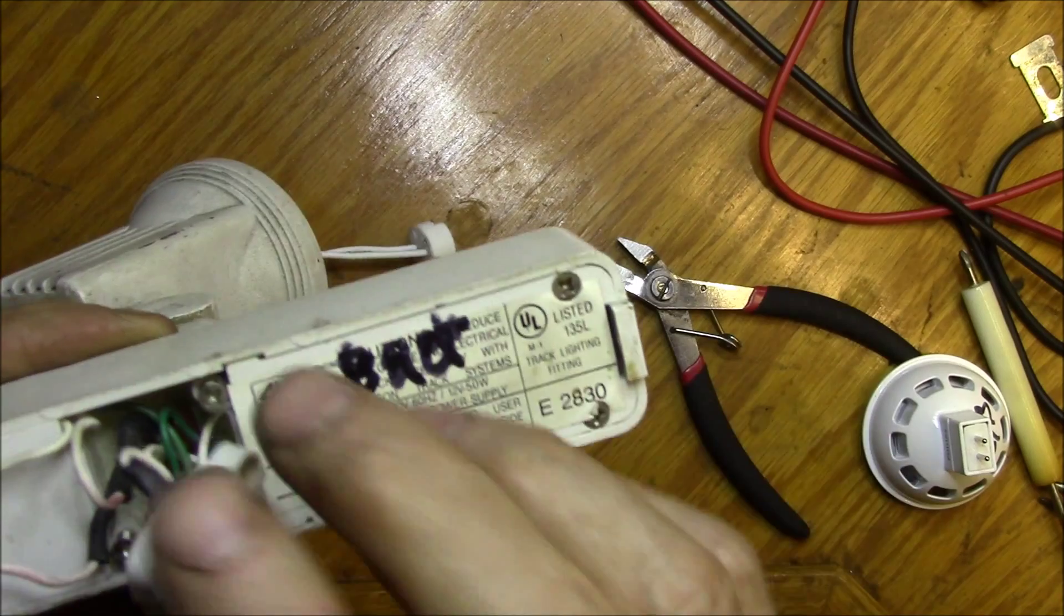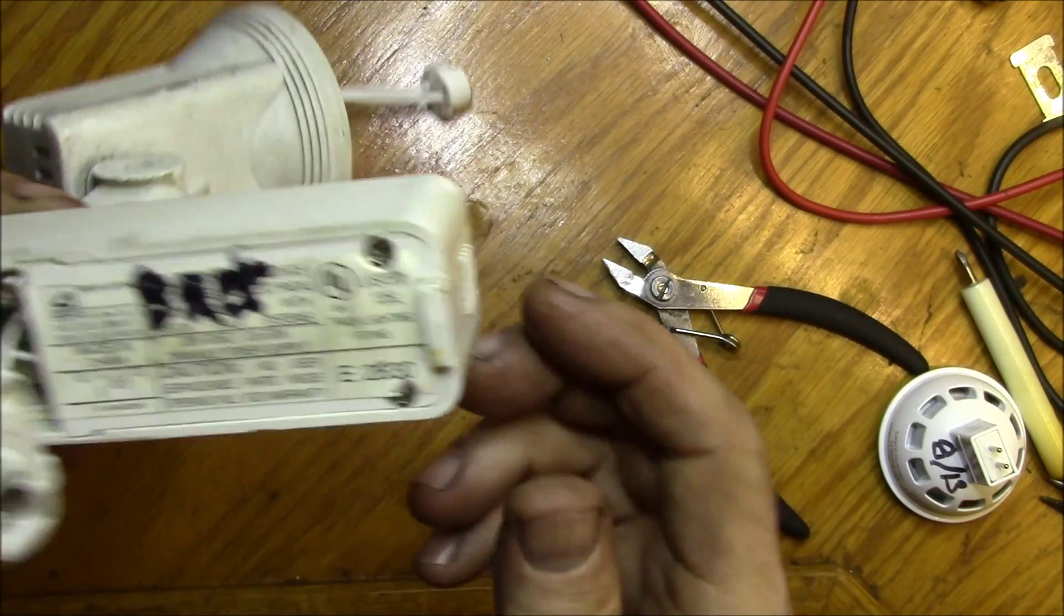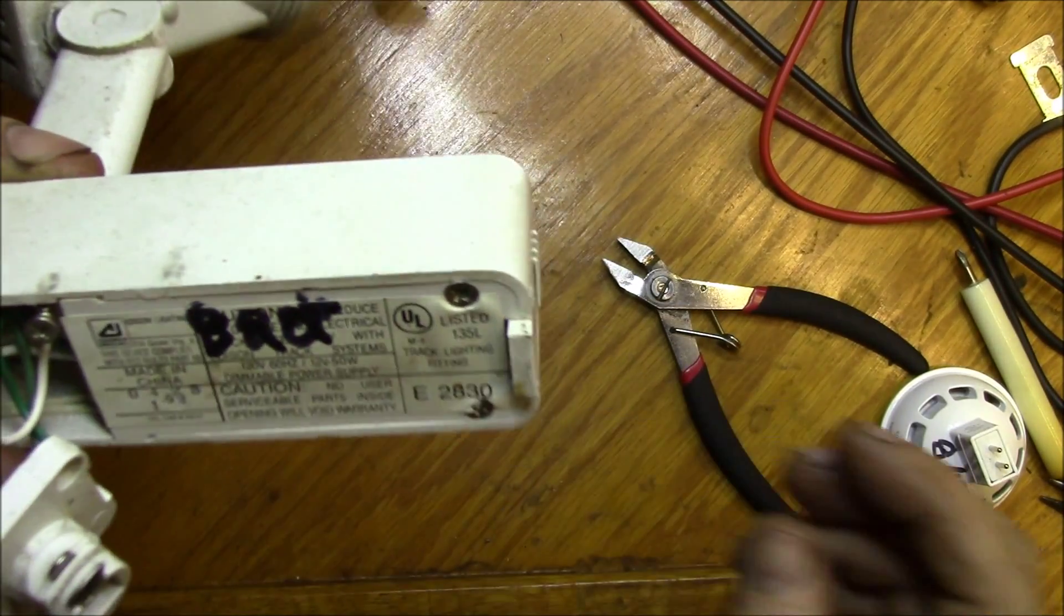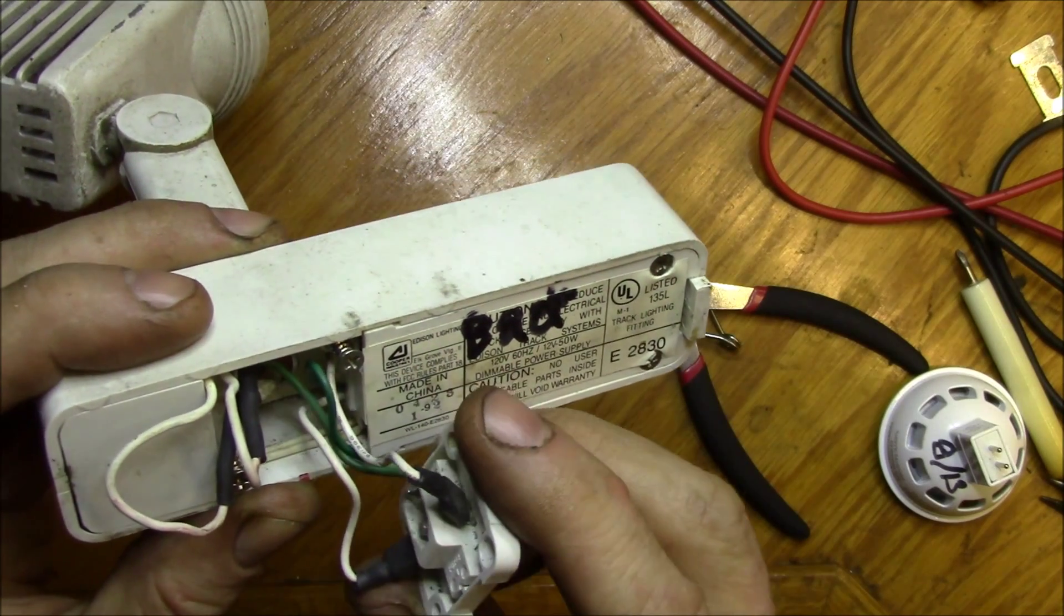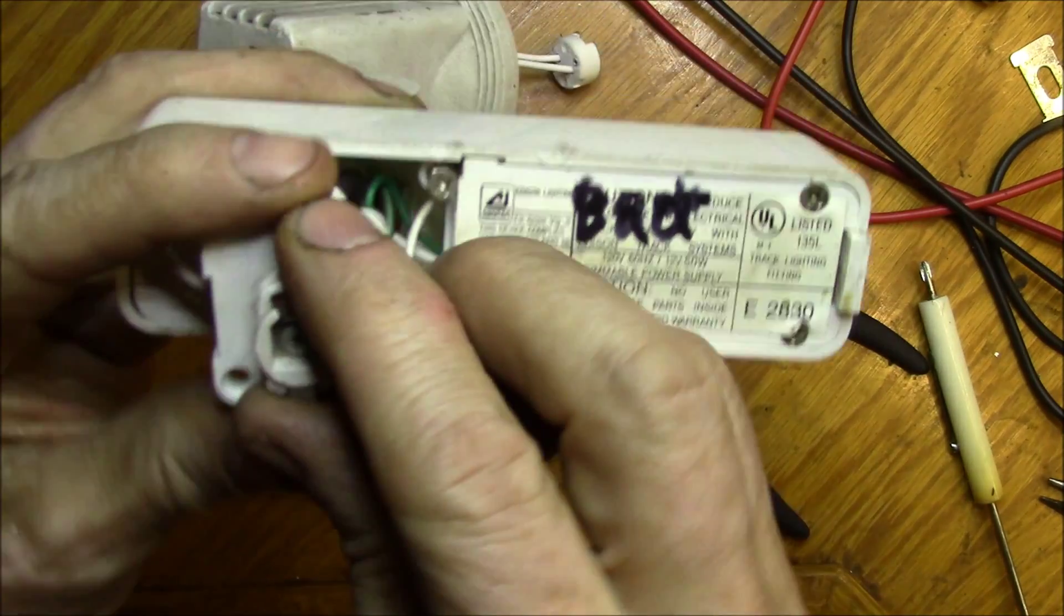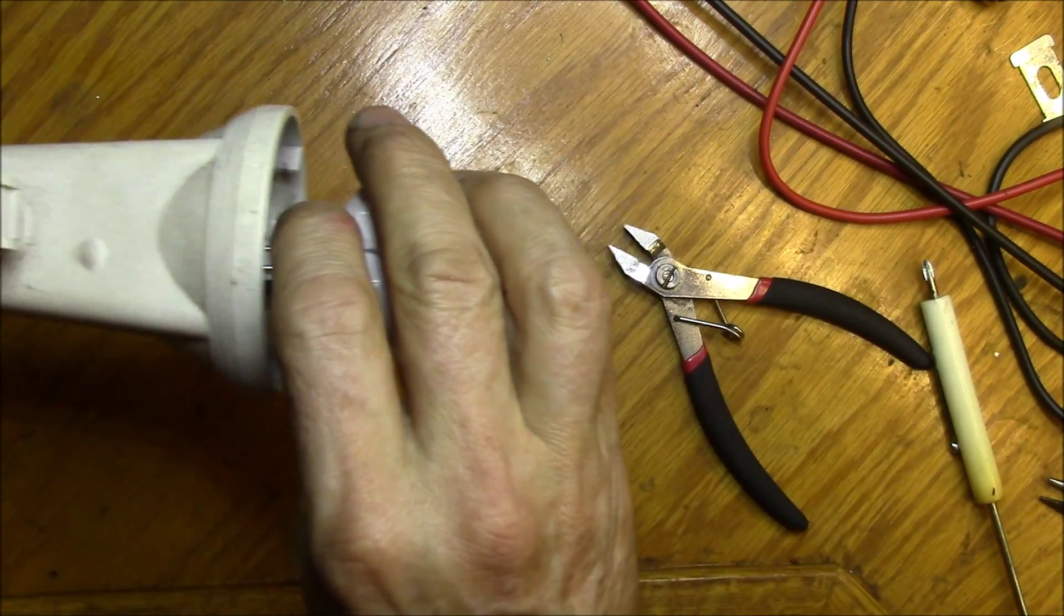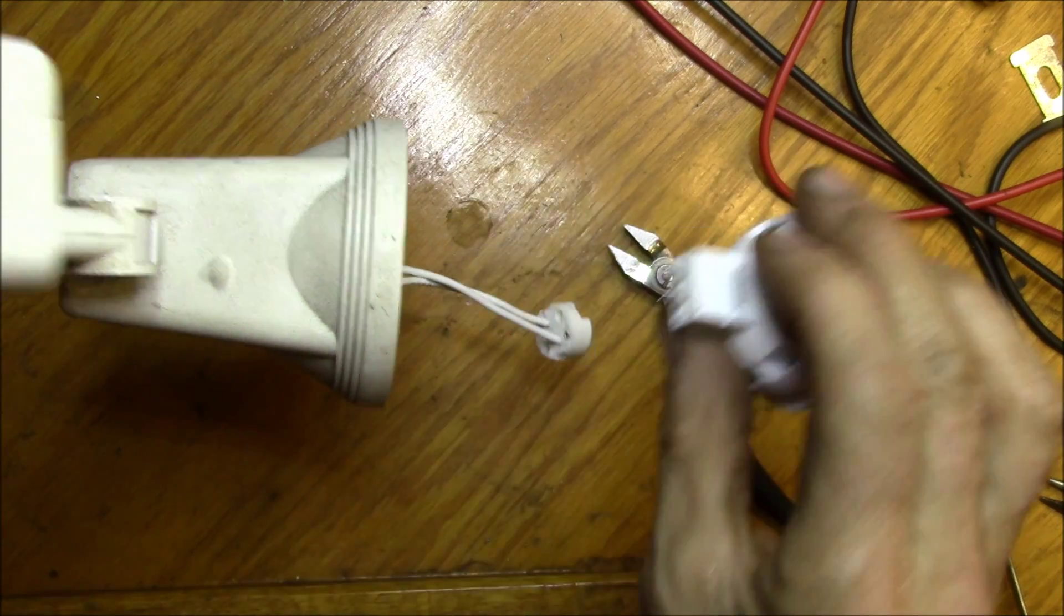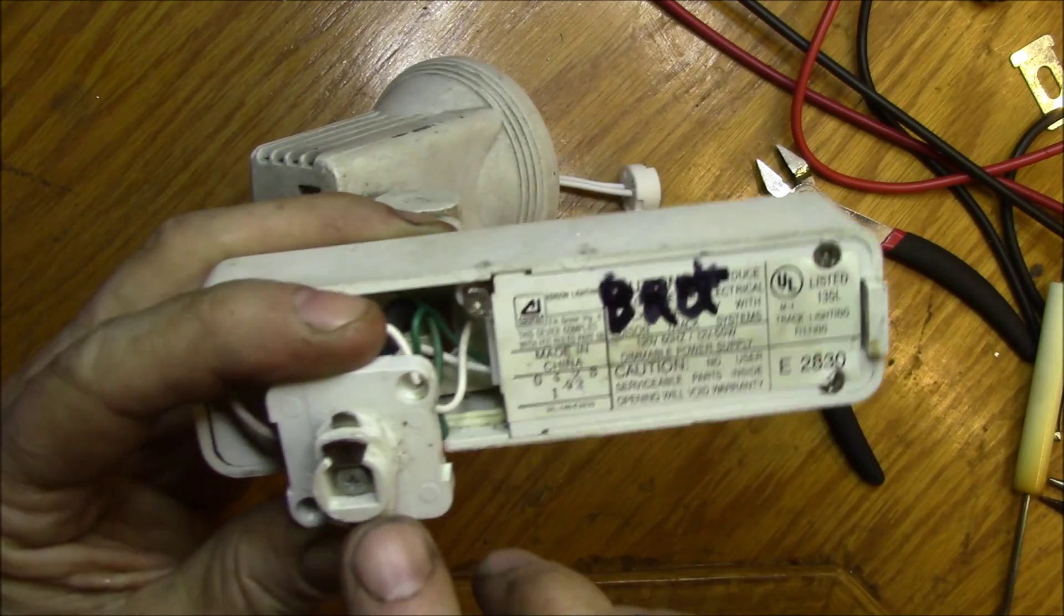What I do is I just bypass all this. I leave it all in there, and the only way someone would know that anything's been done to this is to tear it apart and look. Because once I get done, you'll plug this into the track just like normal, you'll plug the light bulb in here just like normal, and you flip the switch and the light comes on just like it did before.